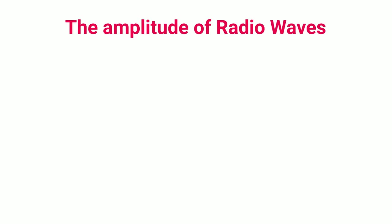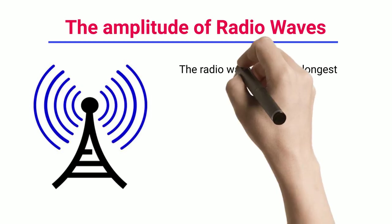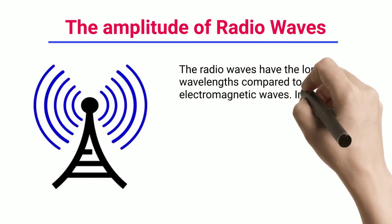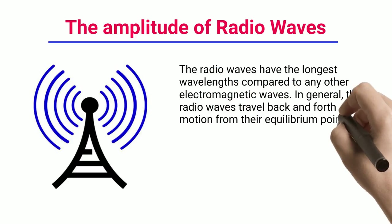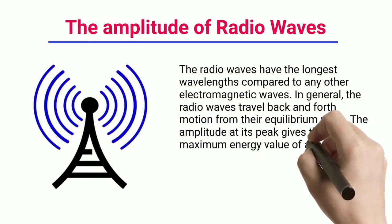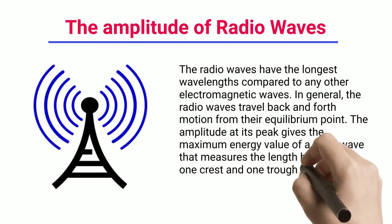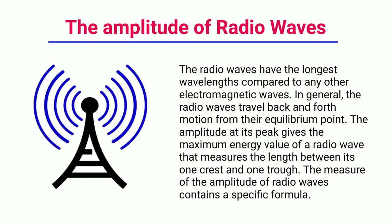The Amplitude of Radio Waves: The radio waves have the longest wavelengths compared to any other electromagnetic waves. In general, the radio waves travel back and forth from their equilibrium point. The amplitude at its peak gives the maximum energy value of a radio wave, measuring the length between its one crest and one trough. The measure of the amplitude of radio waves contains a specific formula.